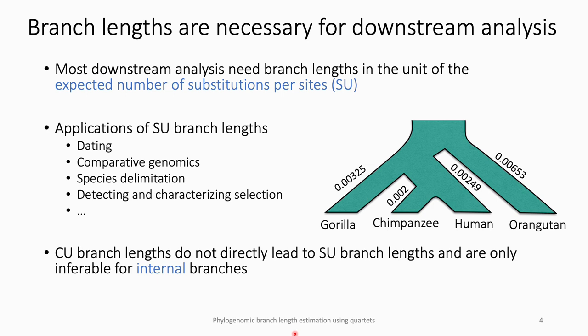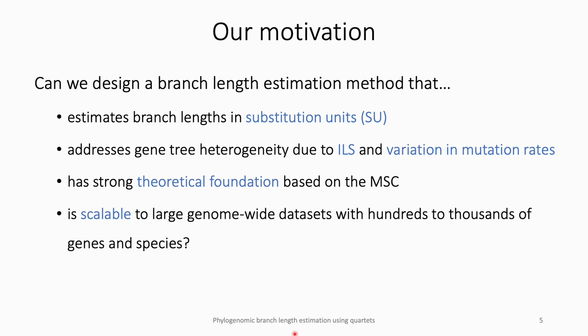Most downstream analyses need a species tree with branch lengths in units of expected number of substitutions per site, or substitution units. Some example applications of substitution unit branch lengths are dating, comparative genomics, and species delimitation, among others. The coalescent unit branch lengths inferred by summary methods don't directly lead to substitution unit branch lengths and can only be inferred for internal branches, further limiting their use. Our motivation was to fill this gap and design a branch length estimation method that produces lengths in substitution units while addressing gene tree heterogeneity due to ILS, allowing for variation in mutation rates, and not assuming a strict molecular clock. We also wanted the method to have a strong theoretical foundation and be scalable to large genome-wide datasets.